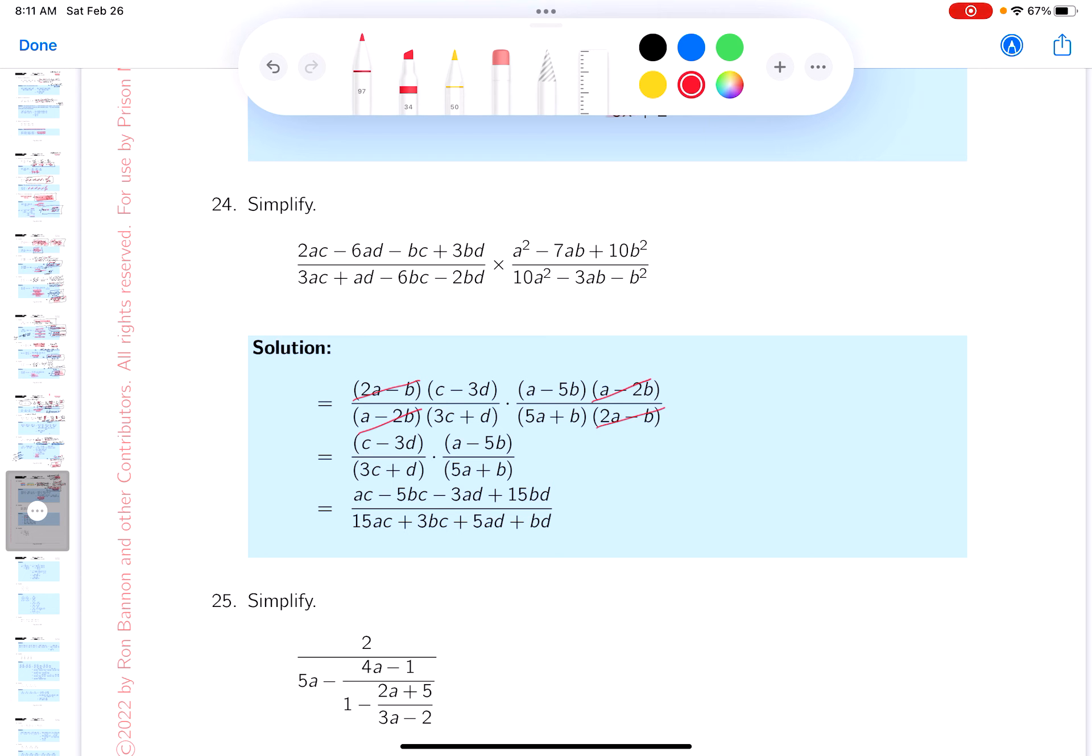So again, the question is, what am I left with? I'm left with c minus 3d, a minus 5b. There are two factors on top, and I see the 3c plus d - that's one of the factors on bottom - and the 5a plus b. So I'm definitely at this next line over here. By the way, I would leave the answer like that, but I want to point out most people don't. What do they do? They multiply it out. I don't think multiplying it adds much to the problem, however, you can multiply that out.